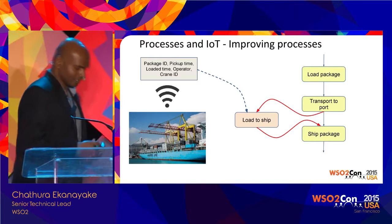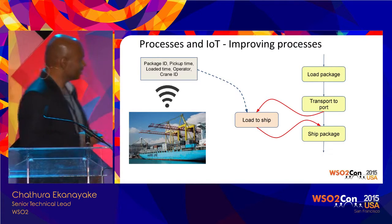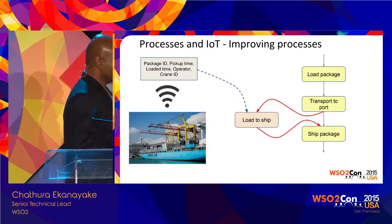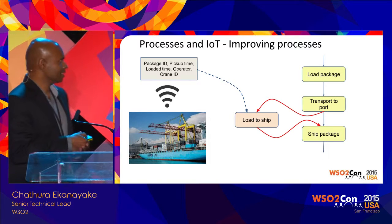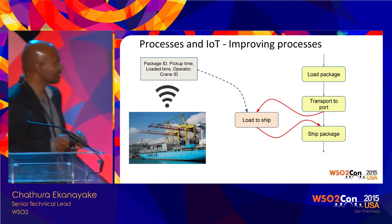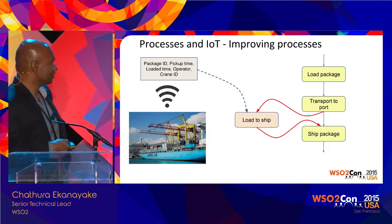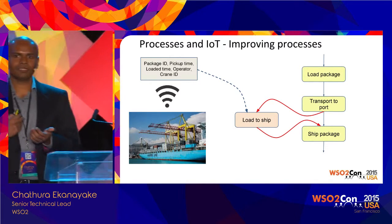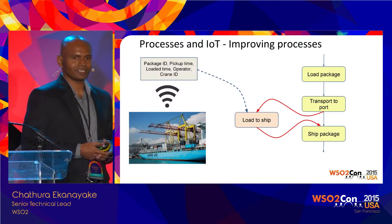There's another aspect about improving processes using IoT. If we assume a crane is involved in loading packages to the ship, and this crane is smart enough to send events — like package ID, pick-up time, and loaded time — for each package it loads, the process centre can capture these events. By analysing the timestamps, it can understand that there's a hidden task between 'transport to port' and 'ship package' and propose adding a new task — 'load to ship' — to the process model. This is how smart devices can help the process centre identify hidden tasks and suggest process improvements.